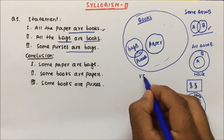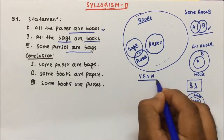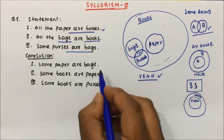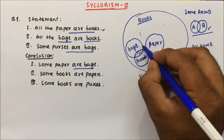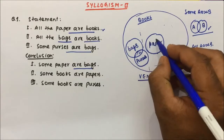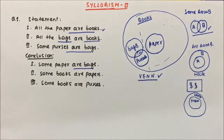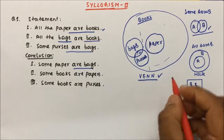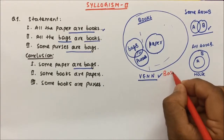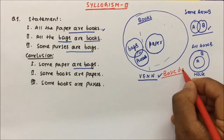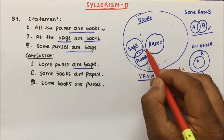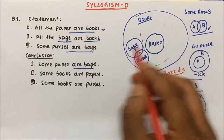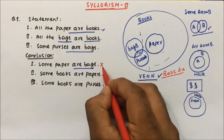This is the Venn diagram drawn from the statements. Now what is Conclusion 1? Some papers are bags. Is there any relation between bags and paper? See the bags and paper — there may or may not be a relation. This is the basic diagram, and in the basic diagram there is no relation between bags and paper. We cannot say if some bags are paper or not, so this will become the wrong conclusion.